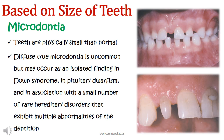Coming to developmental defects based on the size of the teeth, it can be either microdontia or macrodontia. Micro means small — teeth are physically smaller than normal, but it should be noted whether the teeth are really small or only appear small due to jaw enlargement, which should be ruled out. Diffuse microdontia is uncommon but may occur as an isolated finding in various syndromes like Down syndrome, pituitary dwarfism, and in association with rare hereditary disorders. In the second picture, the maxillary lateral is abnormally small — a case of isolated microdontia — while the upper picture shows diffuse microdontia where all teeth of the arch are small.